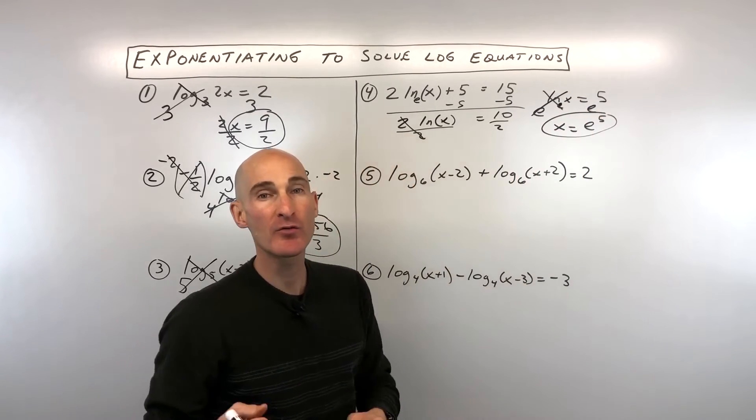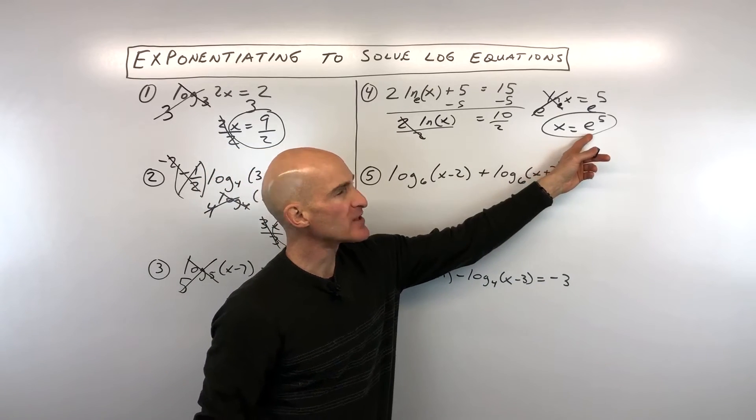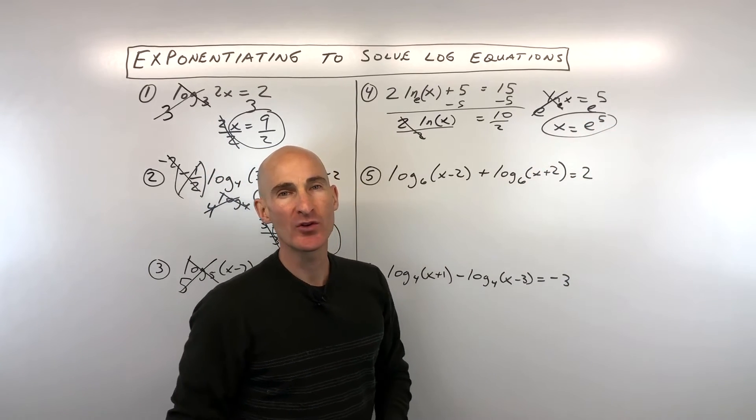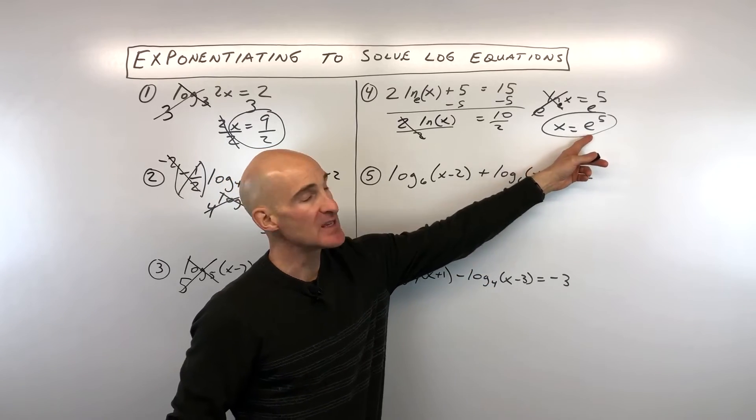Now, you can do E to the 5th on your calculator. Remember, E is just like 2.71 to the 5th power. Or you can use, of course, the E key, the natural base E, on your calculator.